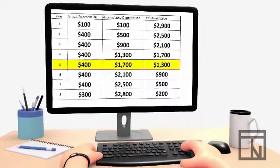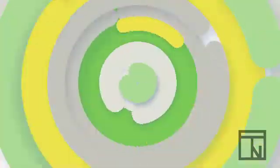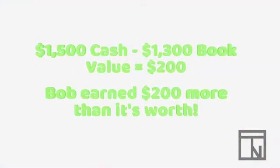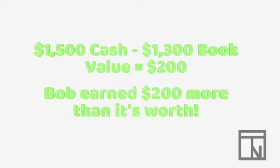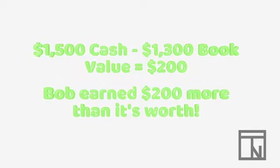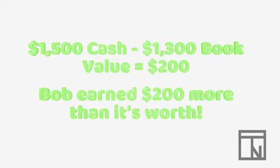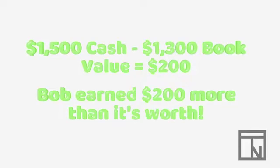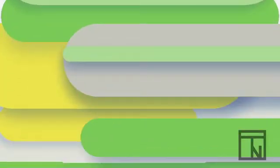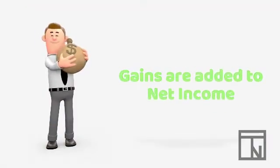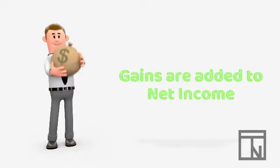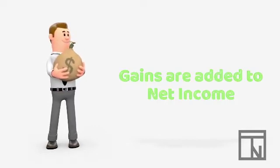So if Bob takes his $1,500 in cash that he got from the sale and subtracts the $1,300 in book value of the equipment, that means he made $200 more in cash than the equipment was worth. That's great! Whenever you make more money on a sale than the asset is worth, we call that a gain.